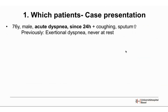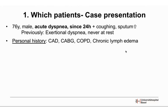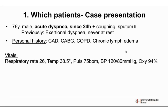To give more clinical background, I'll present a case: a 76-year-old gentleman who presented with acute dyspnea to our emergency department. He had dyspnea since the day before along with cough and excessive sputum production. He was used to dyspnea on exertion but this episode was different and frightening. His medical history included known coronary artery disease, prior CABG, COPD, and chronic bilateral lymphedema.